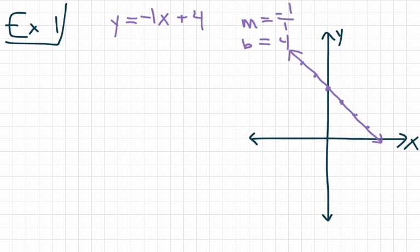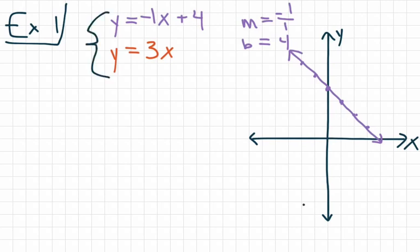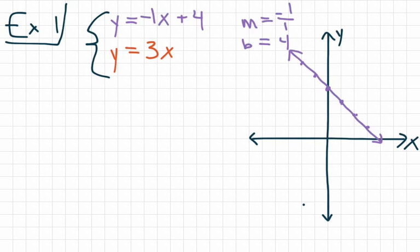When graphing a system of equations, we add a second graph to our coordinate grid. We're going to use y equals 3x as our second equation. To show that this is a system of equations, each problem should have a brace symbol — a curly bracket. That brace symbol tells us we're dealing with a system of equations: we need to graph both equations on the same coordinate grid and identify the point where they intersect.